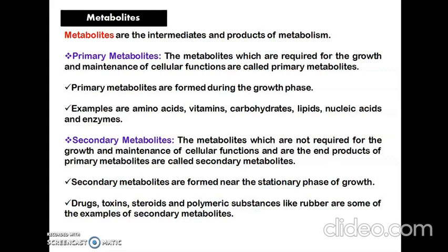Secondary metabolites are produced from primary metabolites as end products of metabolic activities. They are formed close to the stationary phase of the growth curve. Examples are drugs, toxins, steroids, and polymeric substances like rubber.